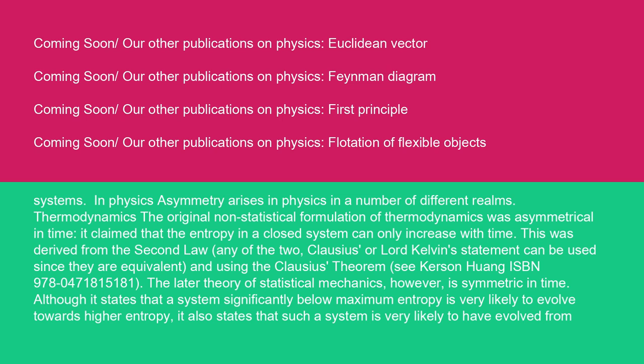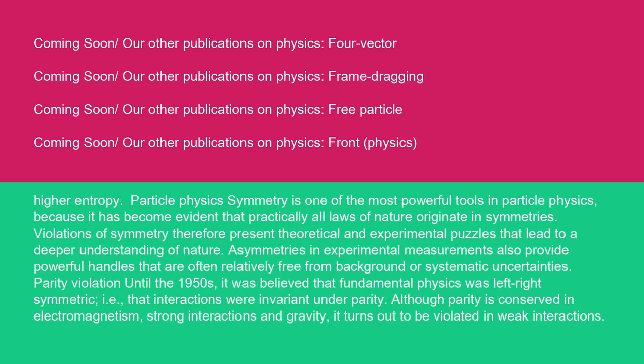The later theory of statistical mechanics, however, is symmetric in time. Although it states that a system significantly below maximum entropy is very likely to evolve towards higher entropy, it also states that such a system is very likely to have evolved from higher entropy. Particle physics. Symmetry is one of the most powerful tools in particle physics because it has become evident that practically all laws of nature originate in symmetries. Violations of symmetry therefore present theoretical and experimental puzzles that lead to a deeper understanding of nature. Asymmetries in experimental measurements also provide powerful handles that are often relatively free from background or systematic uncertainties.